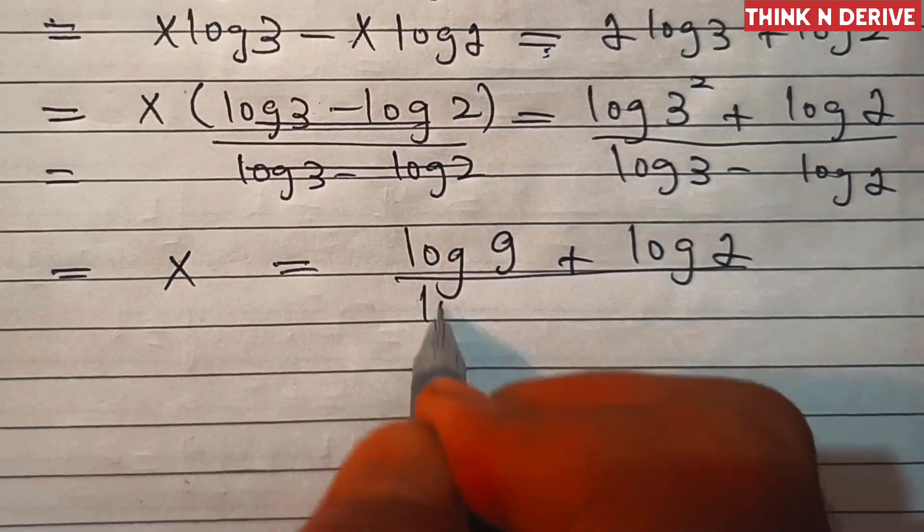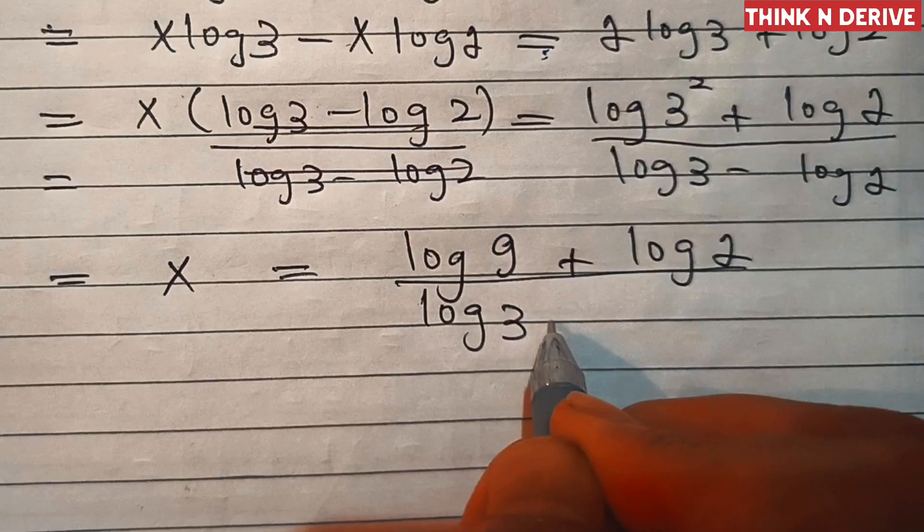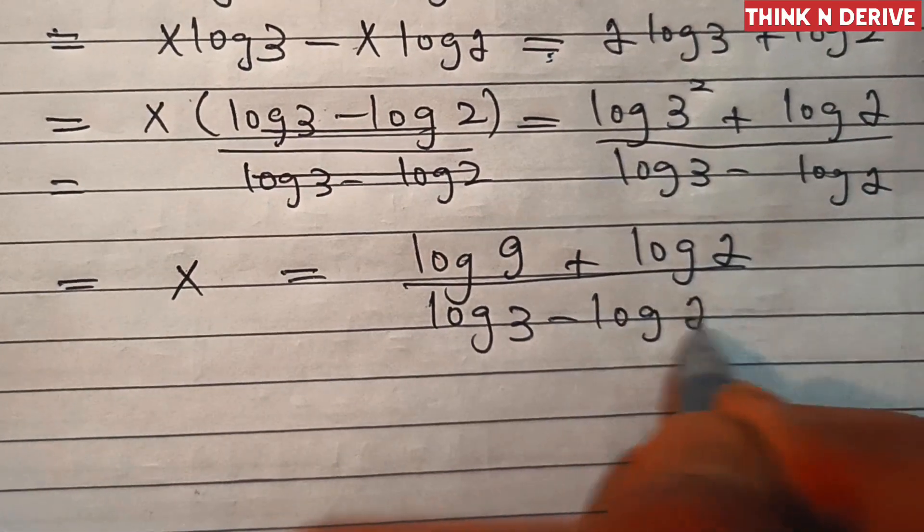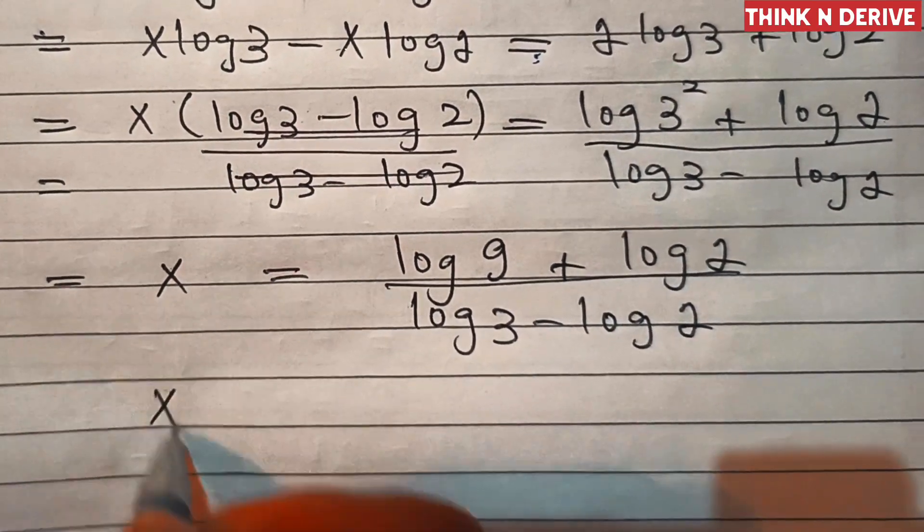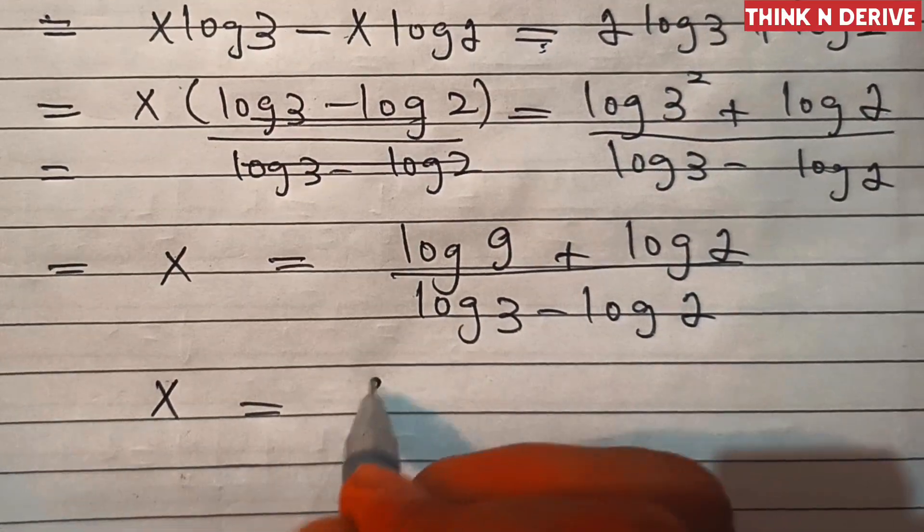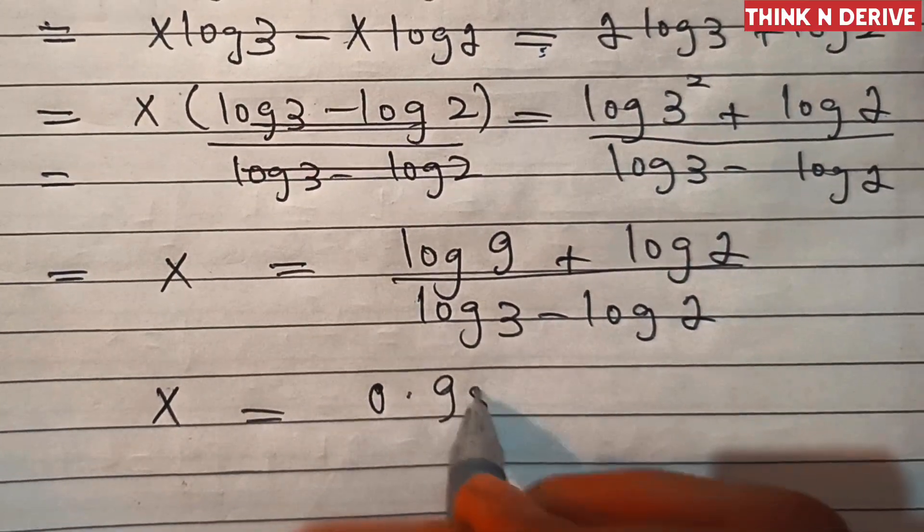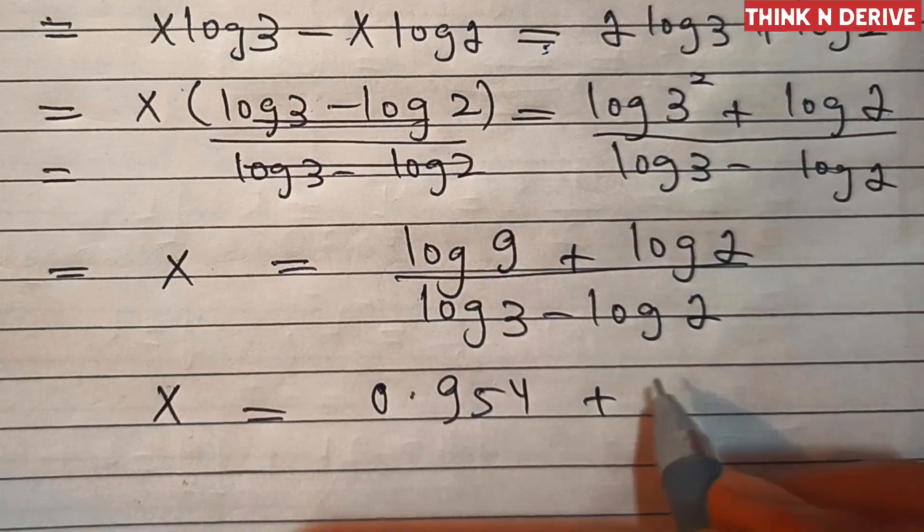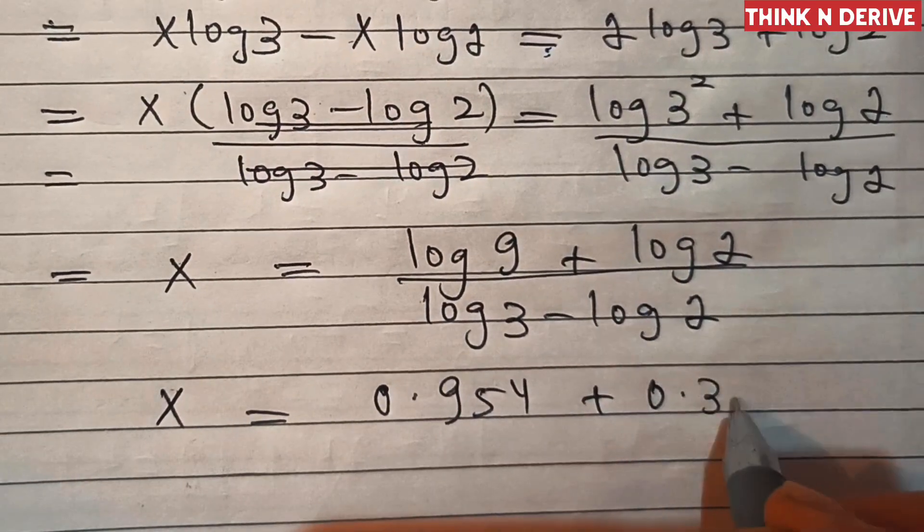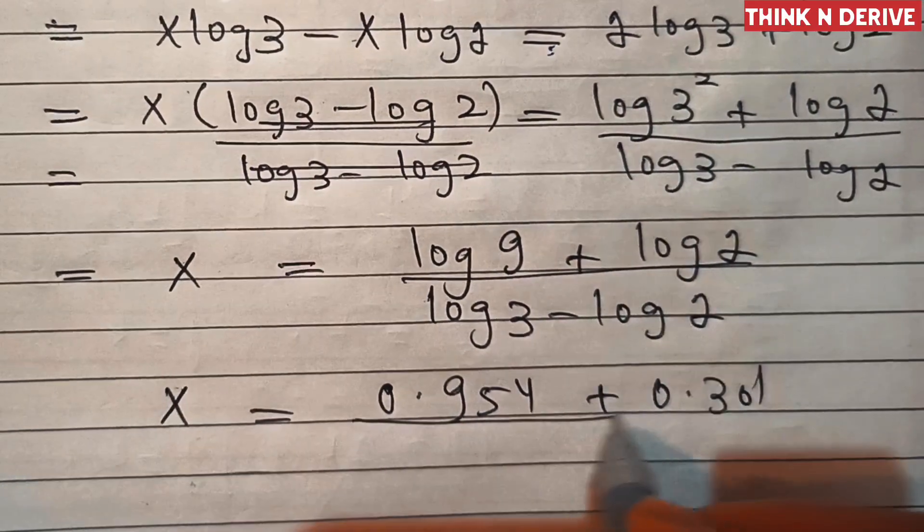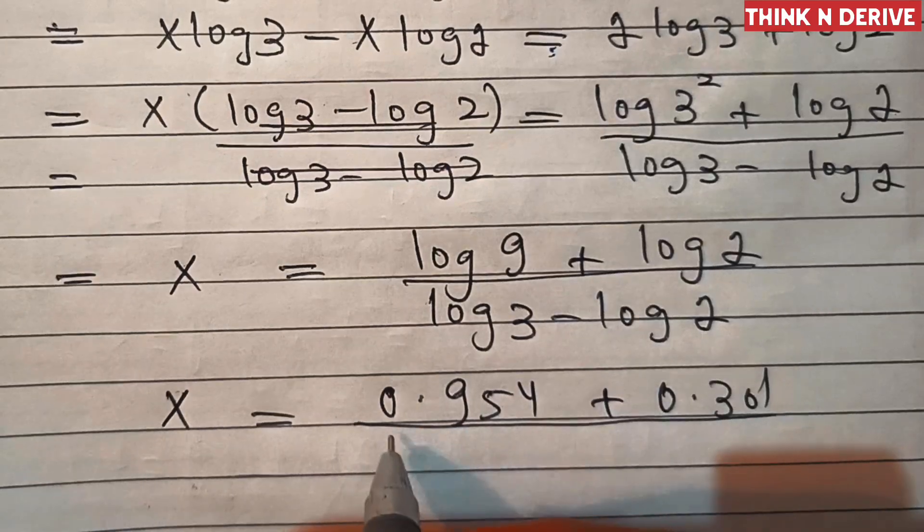Log of 3 which is equal to 0.477 minus 0.301 divided by log of 3 which is equal to 0.477 minus 0.301.